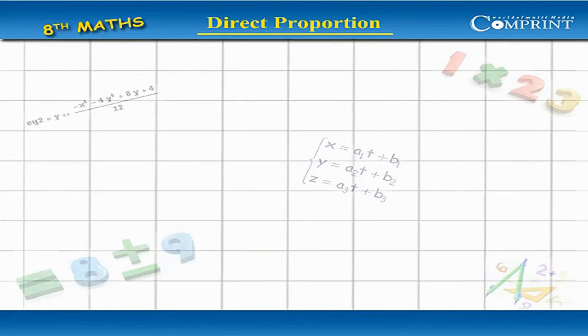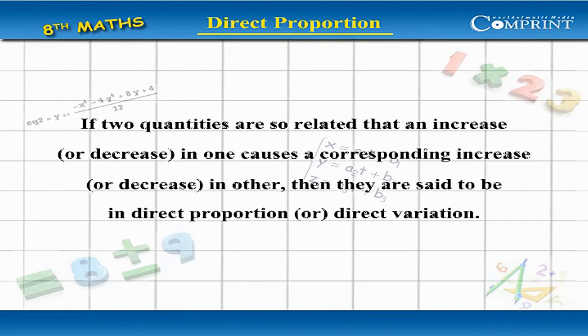Direct Proportion: If two quantities are so related that an increase in one causes a corresponding increase in the other, then they are said to be in direct proportion or direct variation.